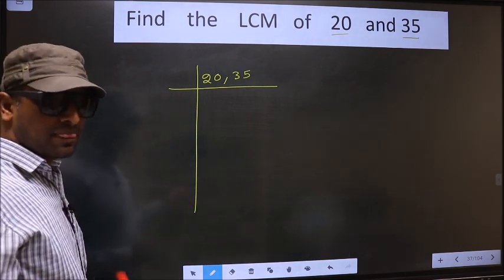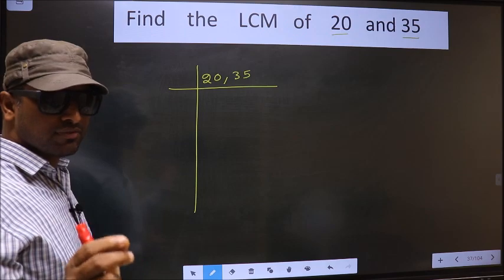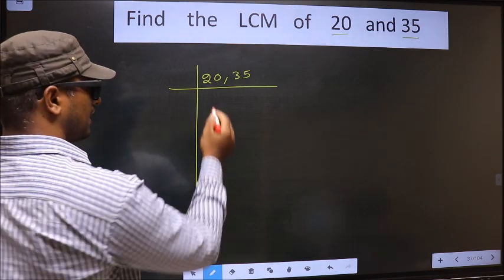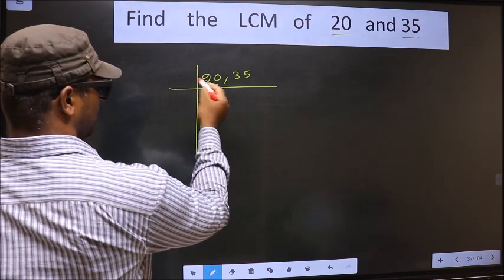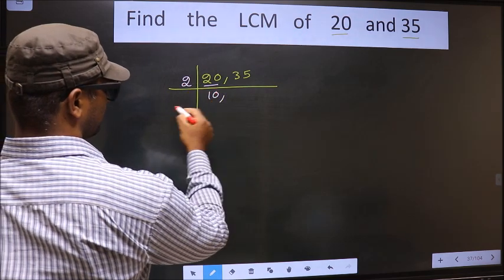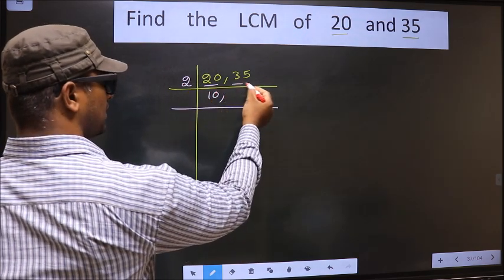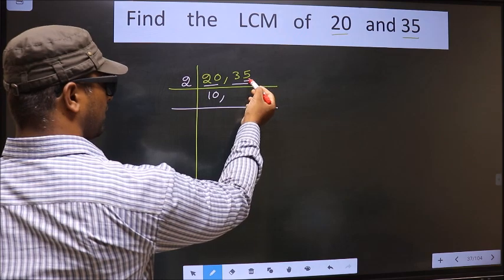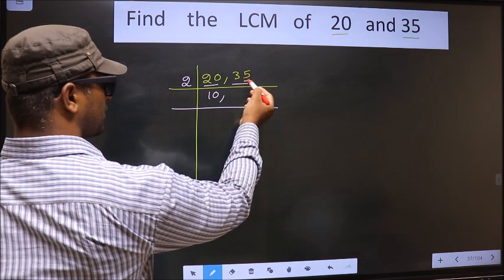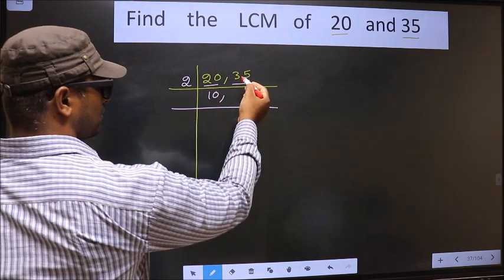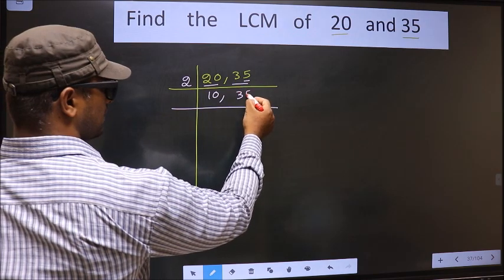Okay, next. Now we should focus on the first number, that is 20. 20 divided by 2 gives 10. The other number 35, here last digit is 5, not even. So this number is not divisible by 2, so we write down 35 as it is.